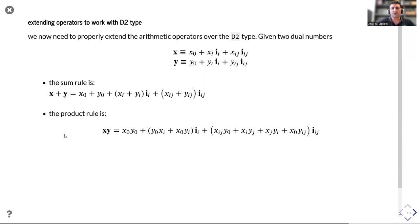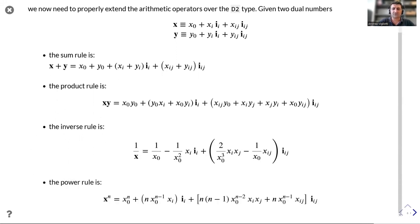When we do the product, similarly, the real part will be the product of the real part. For evaluating the gradient, we will use the derivative rule for the product of two variables. And for evaluating the hessian, we will use the second derivative of the product of two variables. Similarly, for the inverse and for the power.